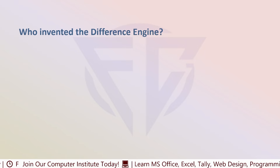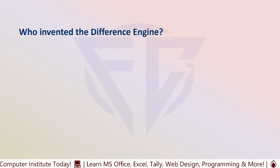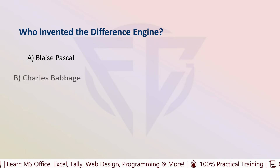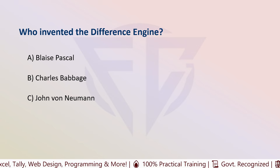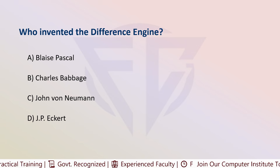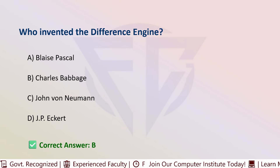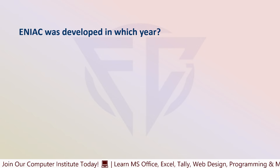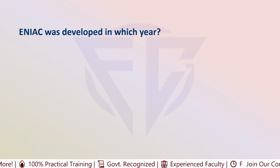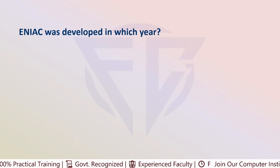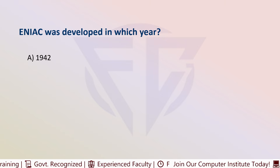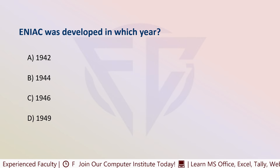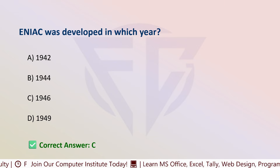The next question is: who invented the Difference Engine? Options are: A) Blaise Pascal, B) Charles Babbage, C) John Von Neumann, and D) JP Eckert. The correct answer is B, that is Charles Babbage. The next question is: ENIAC was developed in which year? Options are: A) 1942, B) 1944, C) 1946, and D) 1949. The correct answer is C, that is 1946.